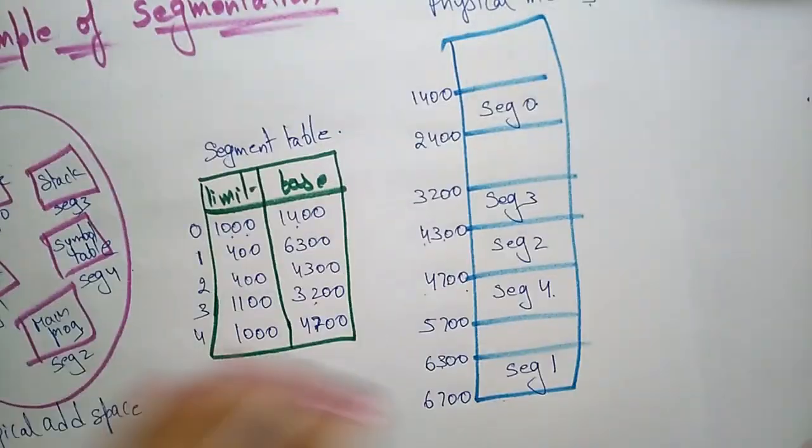So this is how each segment is stored in physical memory by adding the limit and the base present in the segment table. Next I will explain the segmentation hardware with a simple example in the next video.